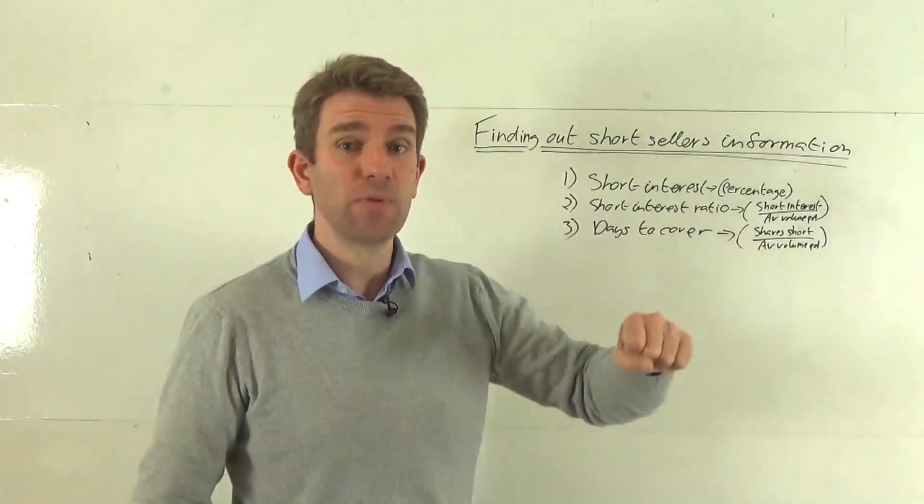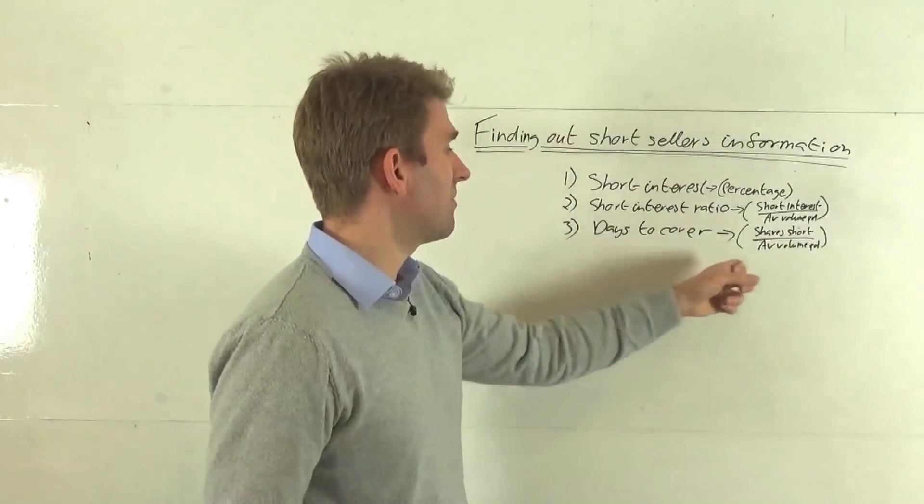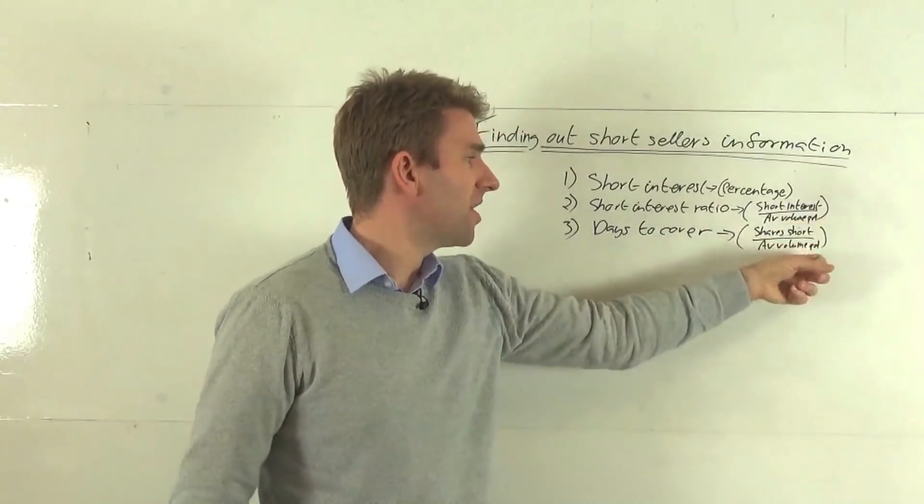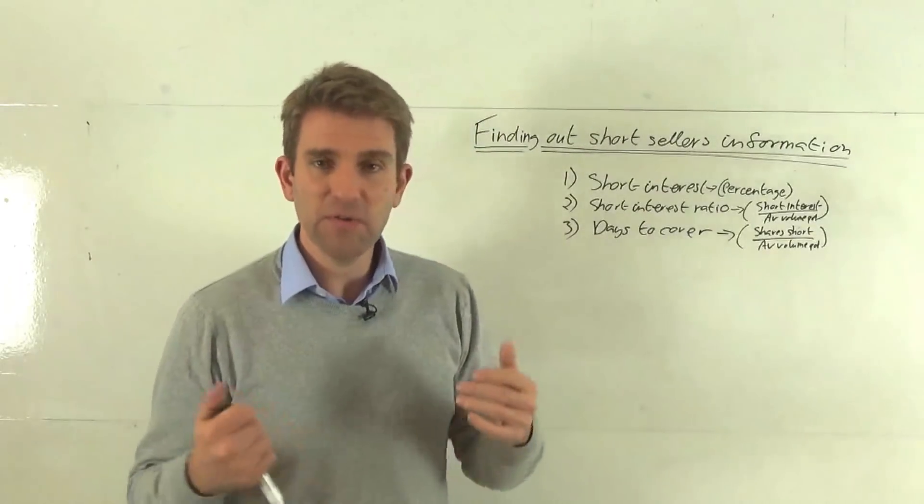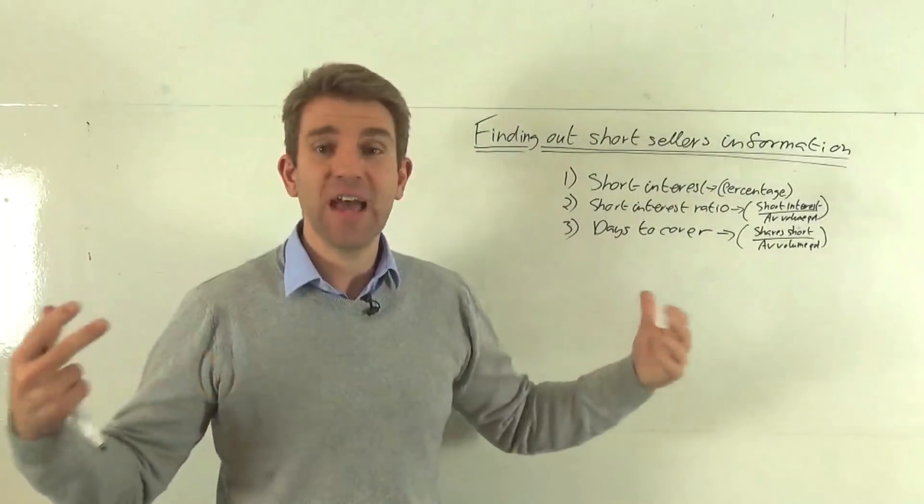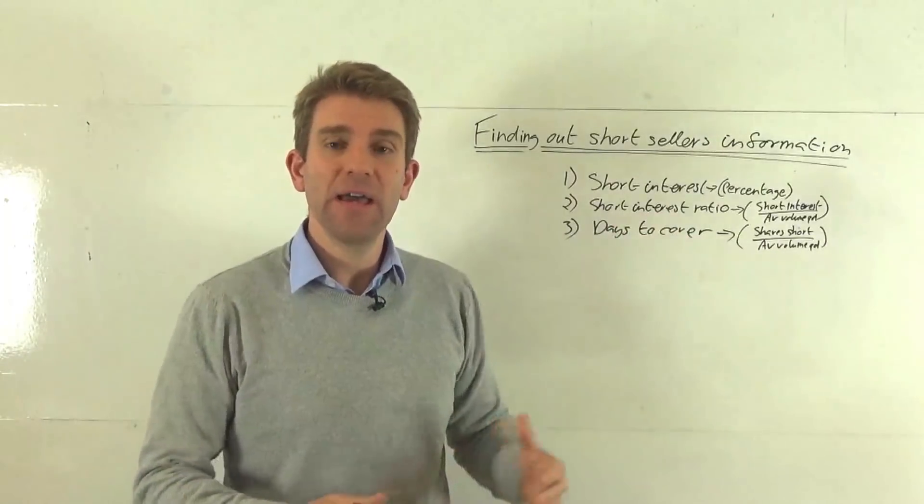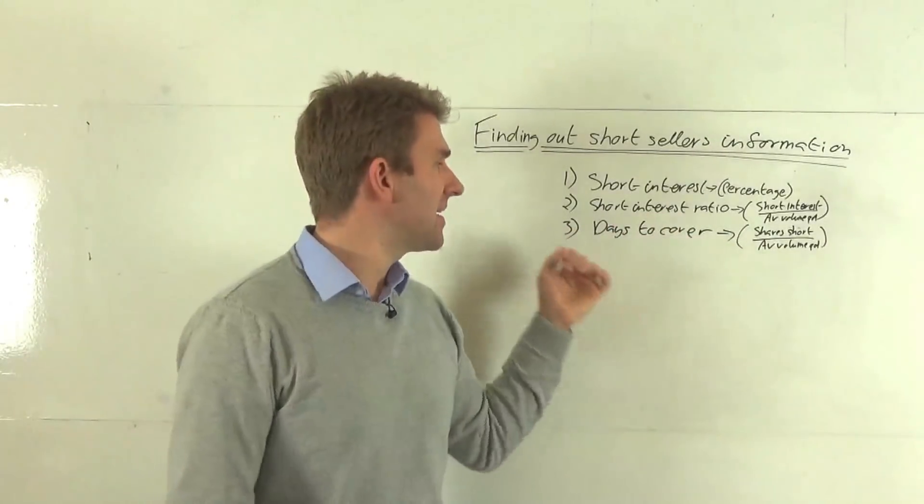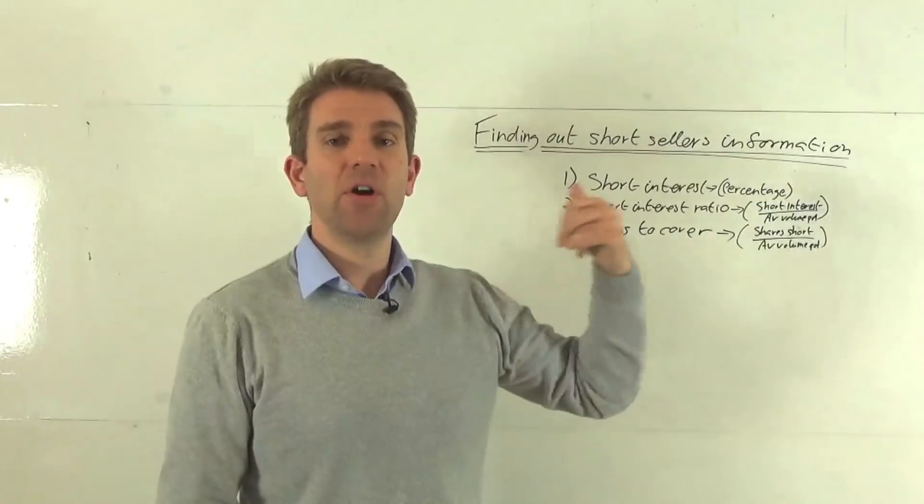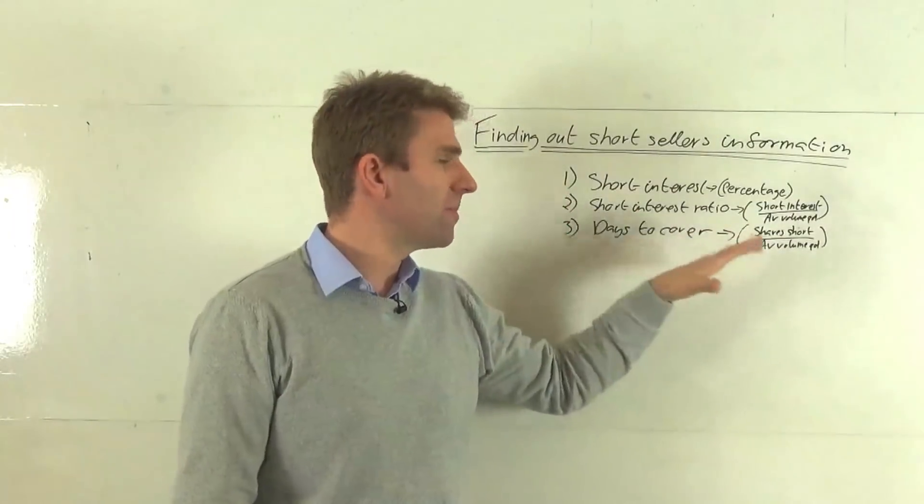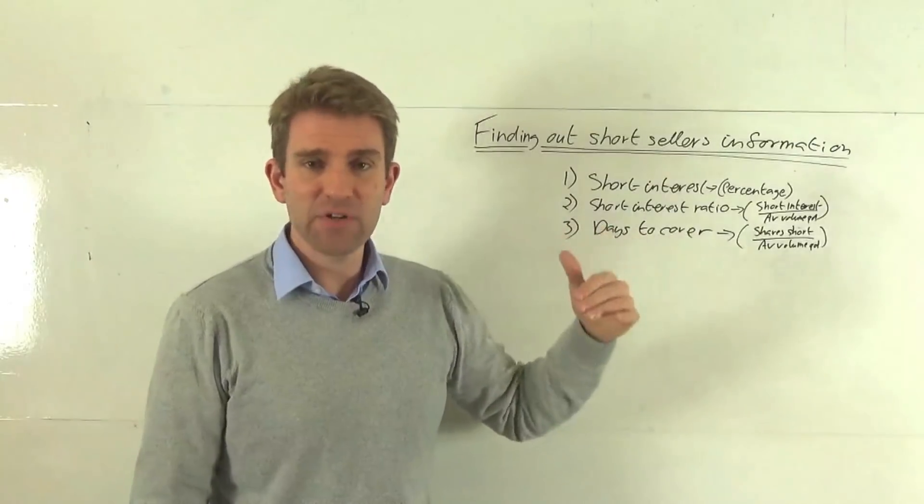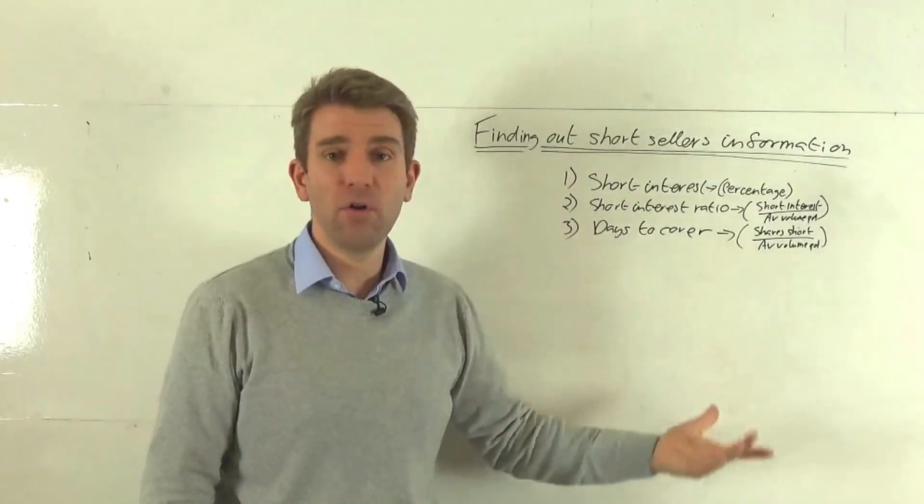Which brings me to number three which is days to cover, which is the number of shares short divided by the average volume per day. This is really interesting because if you've got five, six, seven, ten, fifteen, twenty days to cover, it basically means how long will it take those traders to cover those short positions based on the average volume per day we have now. Assuming the average volume per day, if they took up all that volume, how many days would it have to cover.